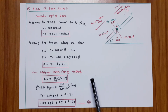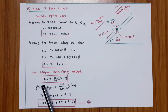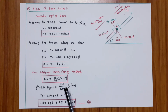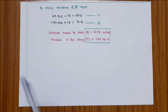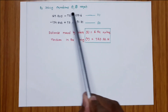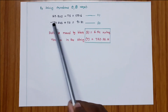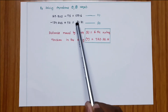Applying the work-energy method for block A: F × s equals (W / 2g) × (v² minus u²). Here F equals T minus 134.64, W equals 200 N, g equals 9.81, v equals 3, u equals 0. Multiplying through by s: T×s minus 134.64×s equals 91.71. This is Equation 2. Now solving Equations 1 and 2 simultaneously.